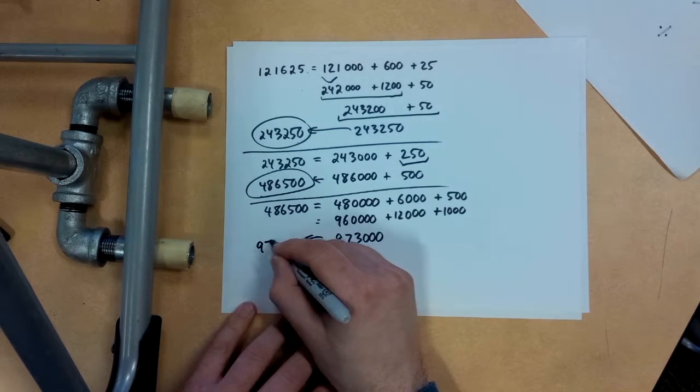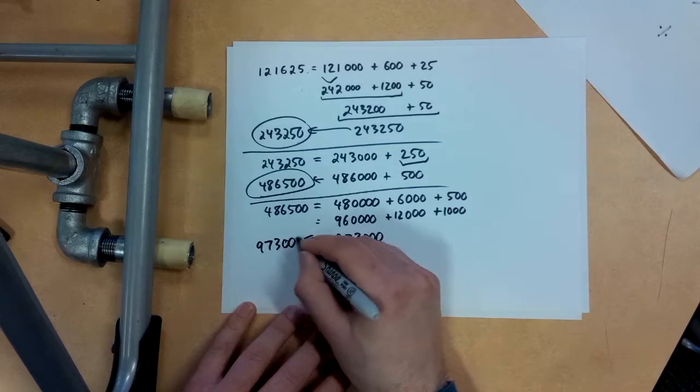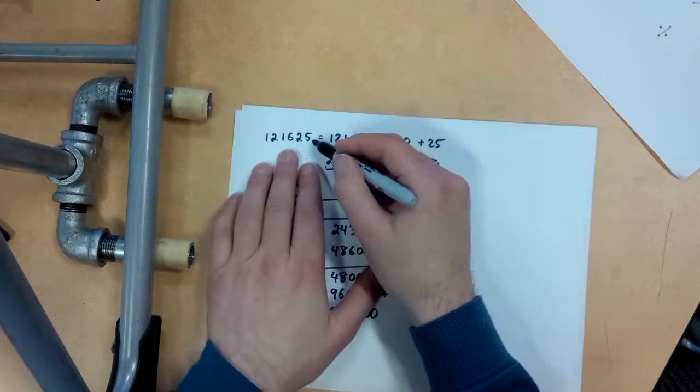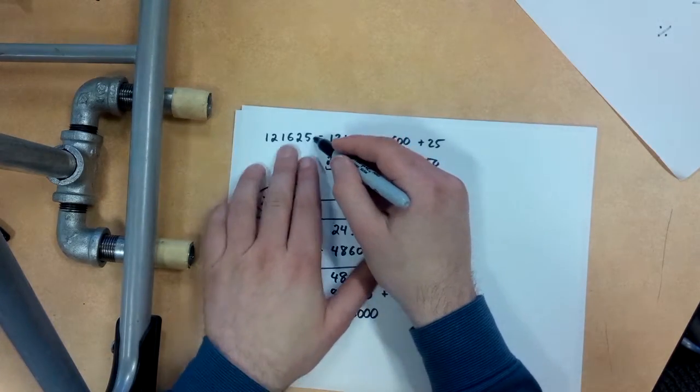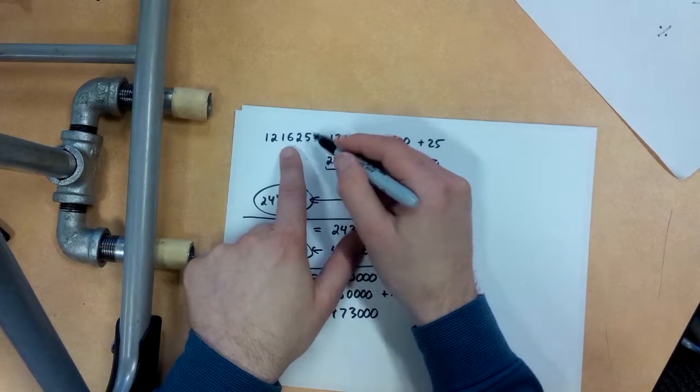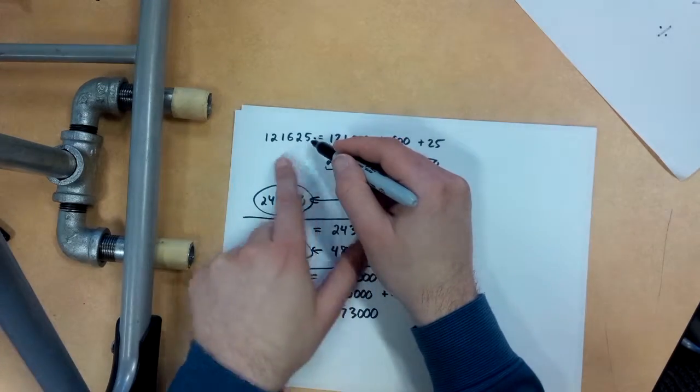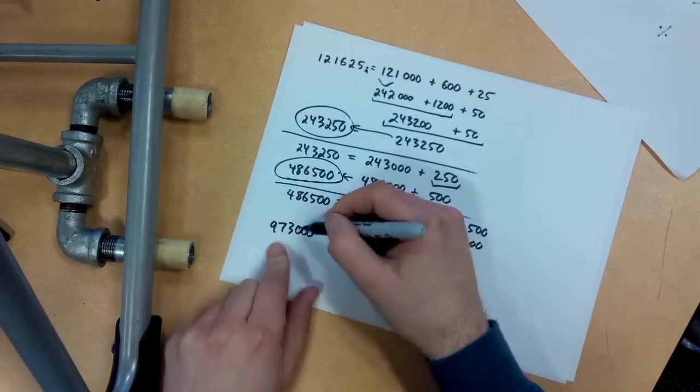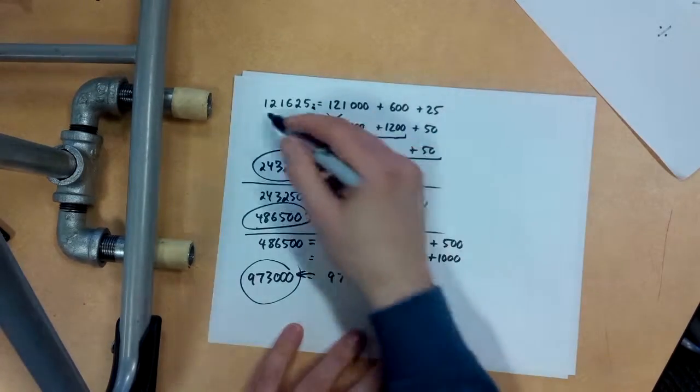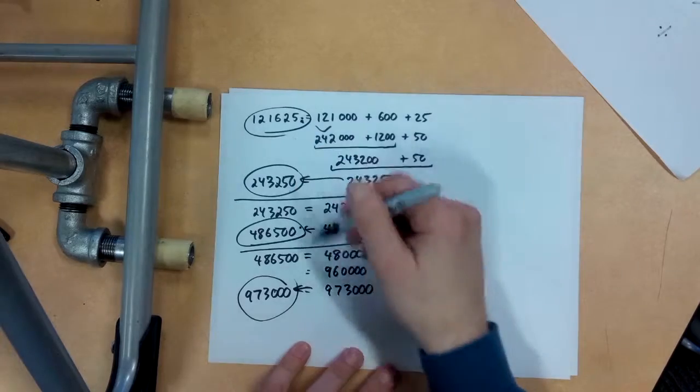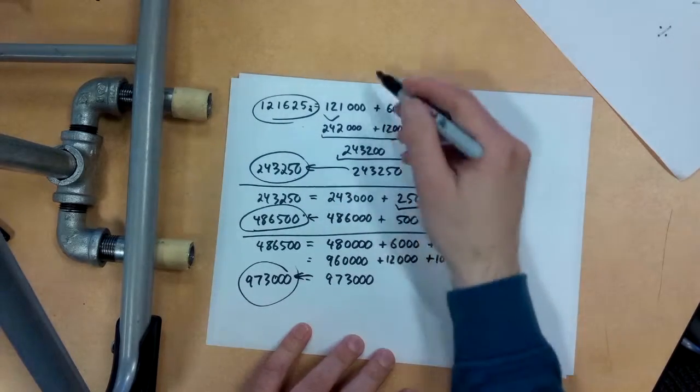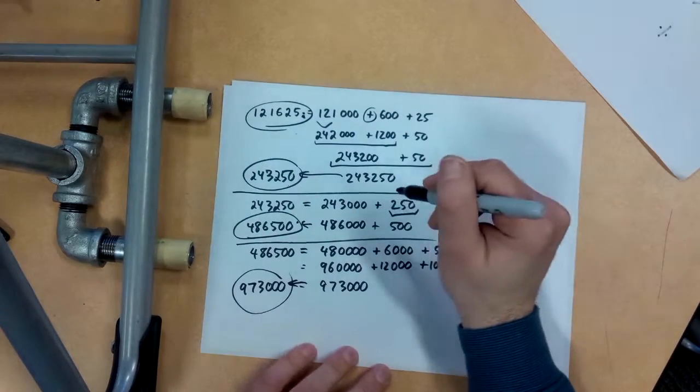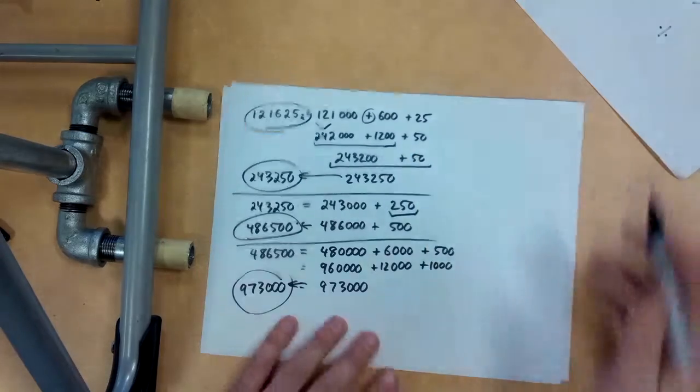So 973,000. So this number times 1 is this. This number times 2 is this. This number times 4 is this. And this number times 8 is this number right here. So look at that. You're doing crazy multiplication and stuff like that. And all you had to know how to do was a little bit of addition here and there. And that's about it.